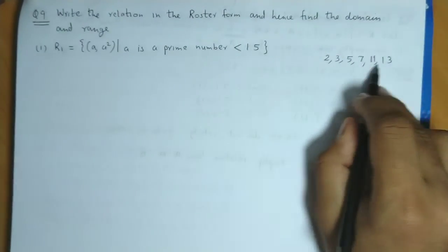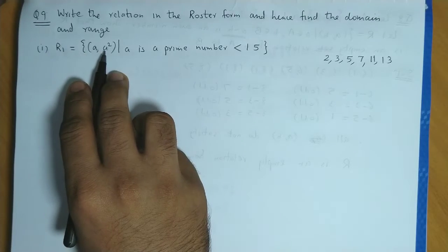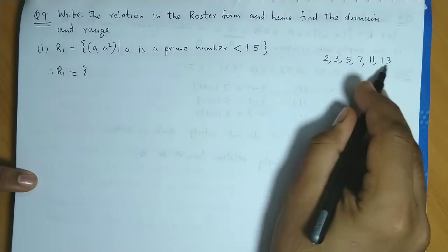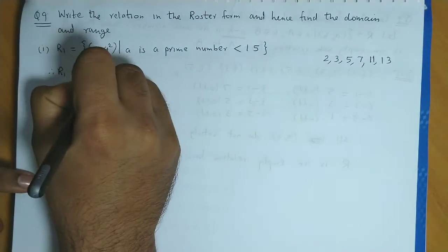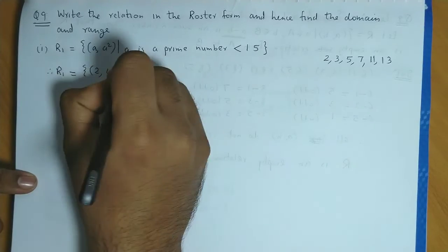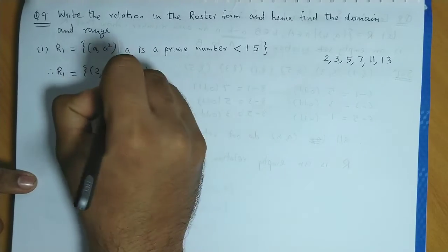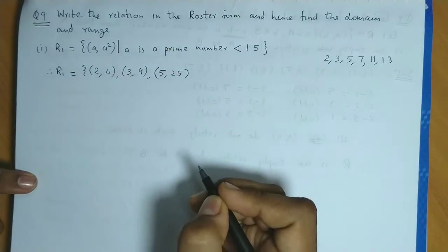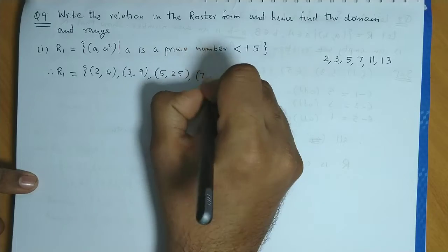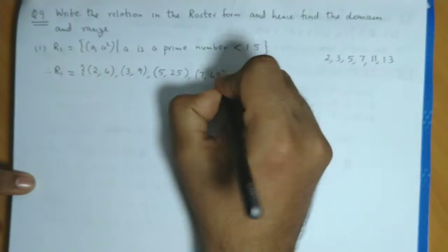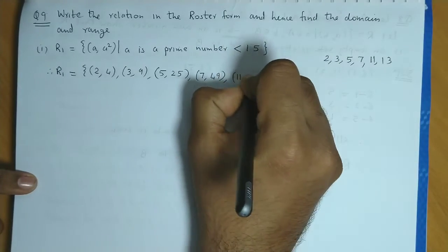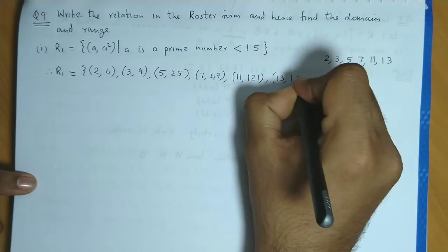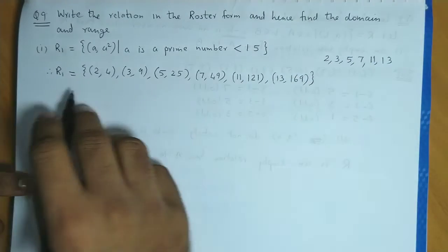So all these values are a. Now we have to write a squared. Therefore we can write R1 as (a, a²). The ordered pairs are: (2, 4), (3, 9), (5, 25), (7, 49), (11, 121), and (13, 169). So these are the ordered pairs.